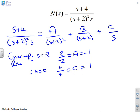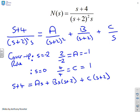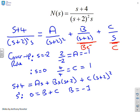To find B, expand everything: s plus 4 equals A times s plus B times s times (s+2) plus C times (s+2) squared. Equating coefficients of s squared gives 0 equals b plus c, therefore b equals minus 1. The inverse Laplace of C over s is just the constant C. B over s plus 2 gives B e to the minus 2t. And A over (s+2) squared gives A times t times e to the minus 2t — the repeated factor introduces a multiplication by t.